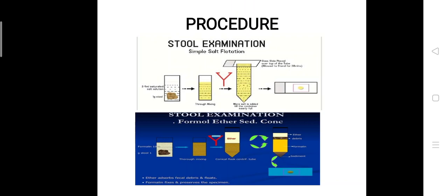On the zinc sulfate centrifugal flotation, the procedure: take one gram of stool specimen and emulsify in 10 parts of tap water. Strain through a wire gauze and collect the filtrate in a Wassermann tube.